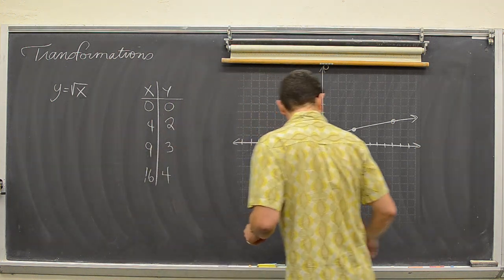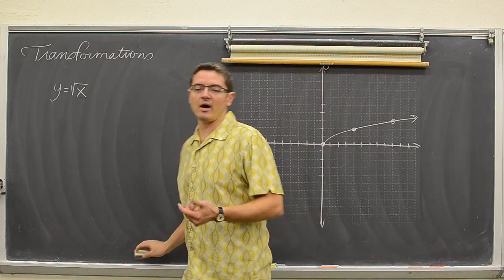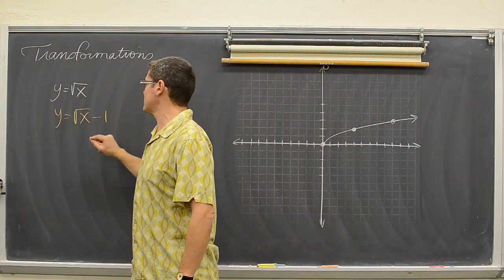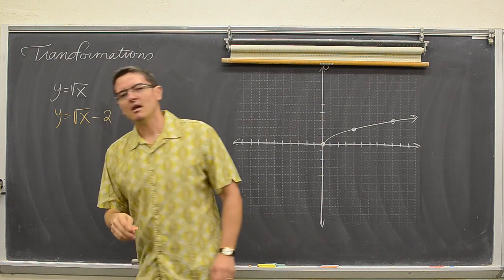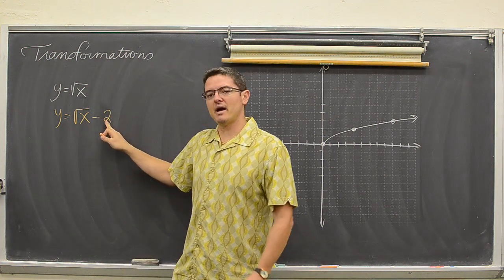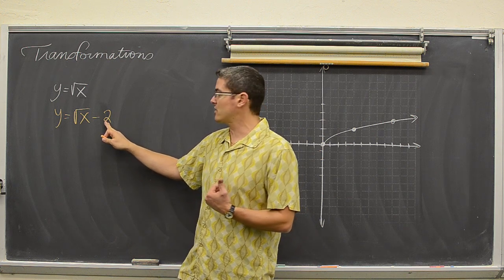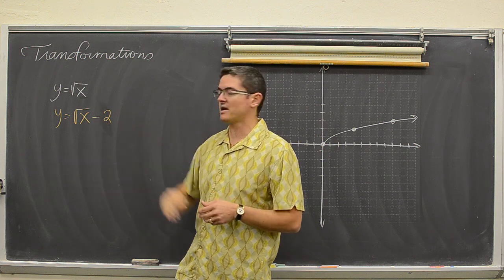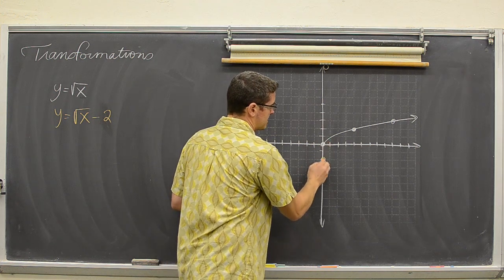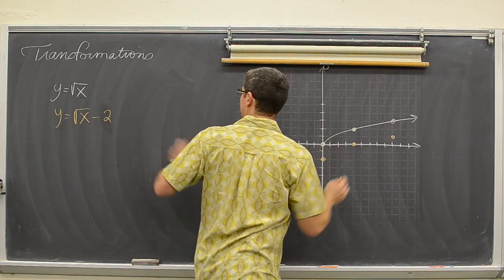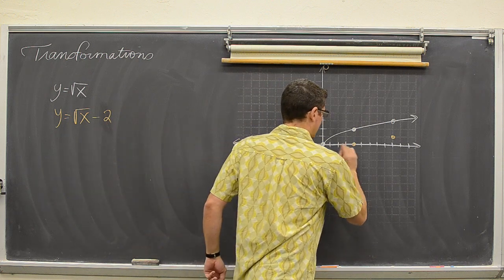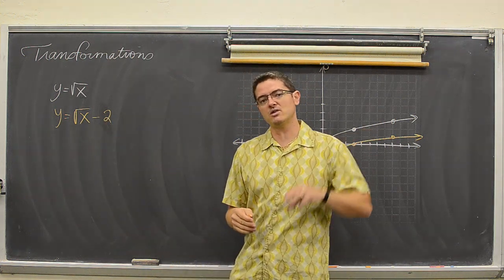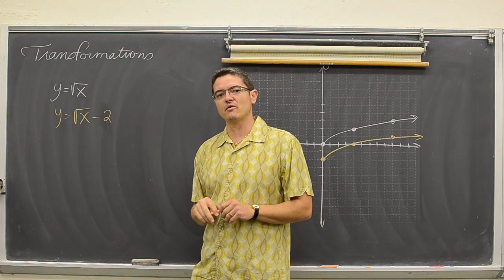Now I don't want to do a t-table every time I draw a different graph, at least not for graphs I am already familiar with. If I want to graph y equals the square root of x minus two, a plus or minus at the end of your equation that is outside the function is a vertical shift. Because it is minus two, we move down two places and redraw the square root function shifted down two places.